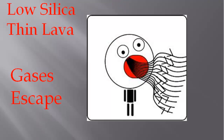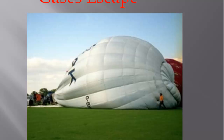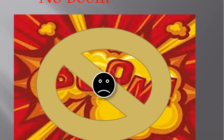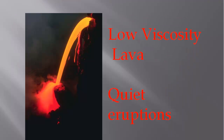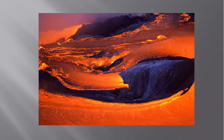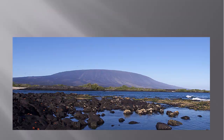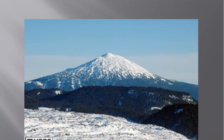On the other hand, when we have low silica, we have thin lava, and the gases are allowed to escape. It's kind of like a balloon with a hole in it — the balloon won't fill up, and we won't get any boom. So with low silica lava, we end up with quiet eruptions where the lava flows, and we end up with a different type of volcano called a shield volcano, where the slopes are very shallow and very wide.